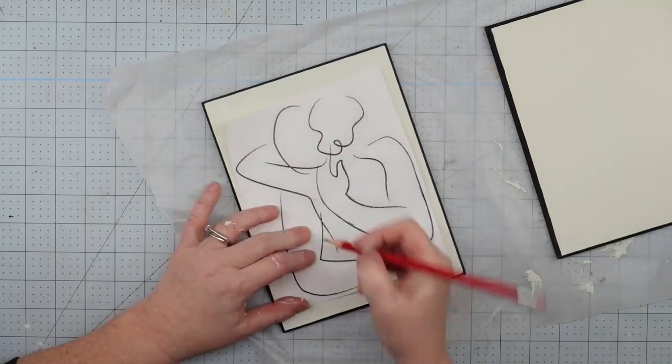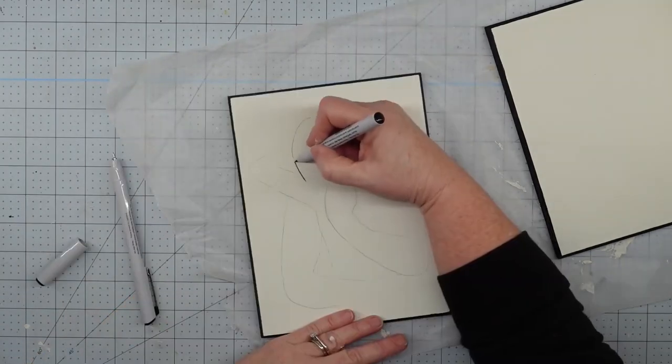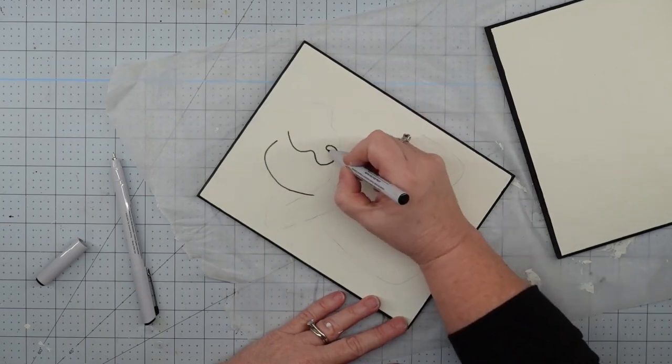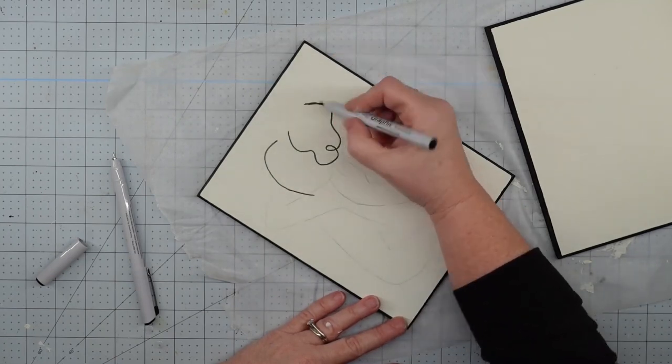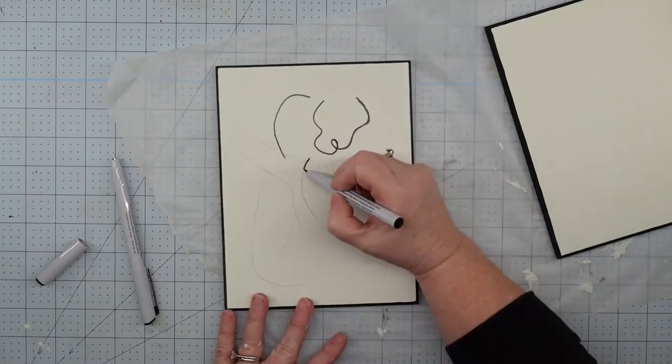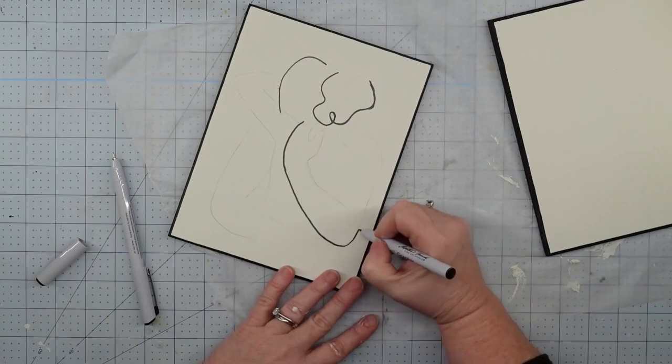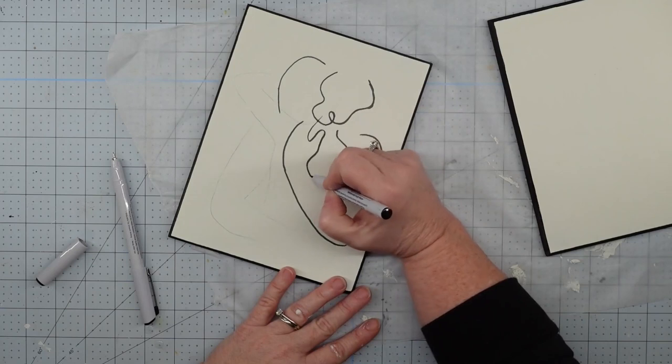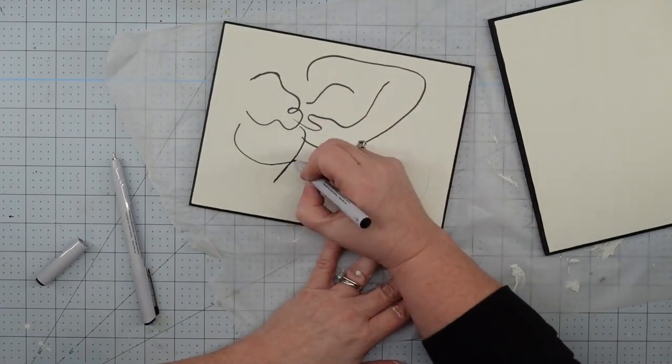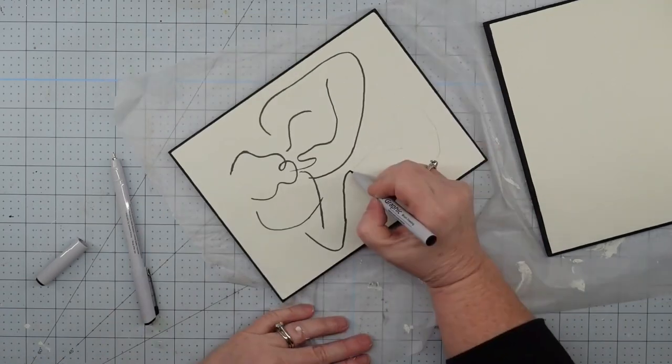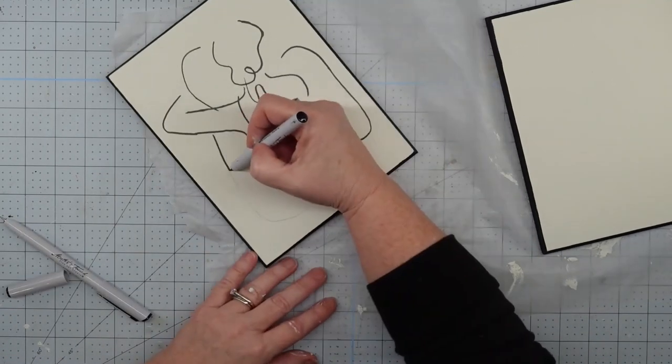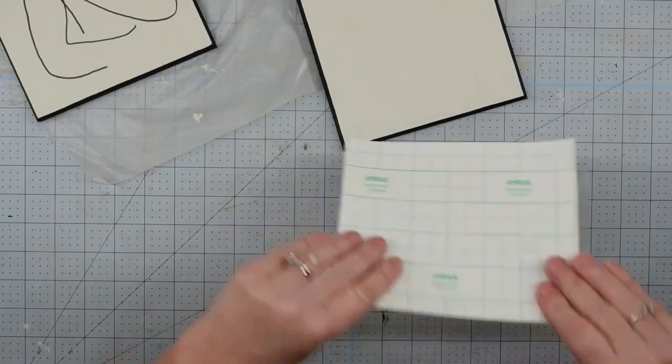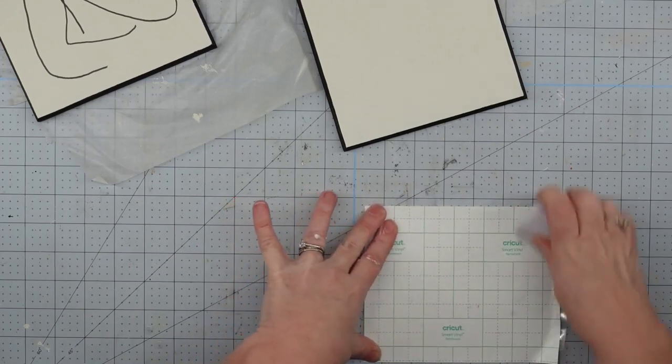Once I got my lines transferred over, I'm just using a permanent marker—this is more of a fine tip one—and filling them in. This is so easy to do and it goes so fast. I just love how it turns out looking, and it doesn't matter if you have some starts and stops in your marker because then it makes it look like you actually drew this on instead of tracing it. I just love the effect that it has. Now we're going to transfer our wording onto our side.